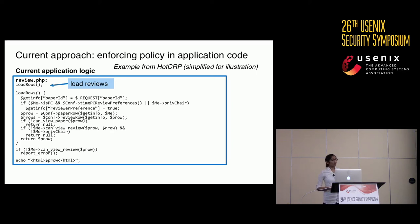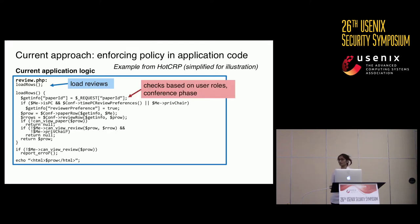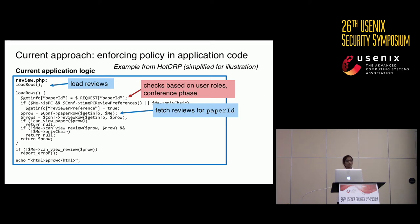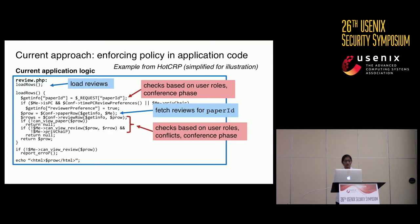At the beginning, the code invokes a function to fetch the reviews for a paper requested by the user. In this function, there are checks based on the role of the user in the conference and the conference phase to determine whether certain fields of the review records should be accessed. Then there is a function call to fetch the reviews based on the user's request. For each row returned, there are additional checks based on the user's role, their conflicts, or the conference phase, and depending on whether these checks succeed, the review row is returned or suppressed.